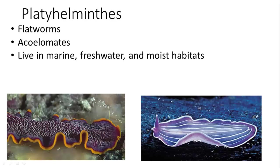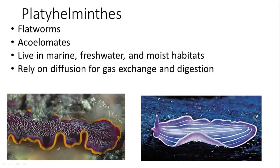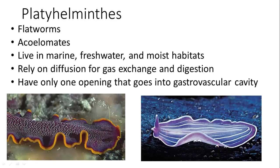Platyhelminthes are flatworms — acoelomates without a body cavity — living in marine, freshwater, and moist habitats. The marine free-living ones are turbellarians. They rely on diffusion for gas exchange and digestion, which is why they must be flat — everything works through the skin. They have only one opening into their gastrovascular cavity, so everything that goes in also comes out as waste.